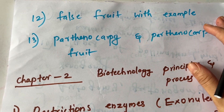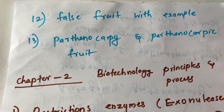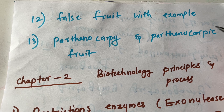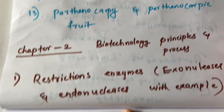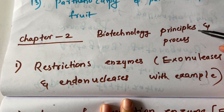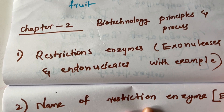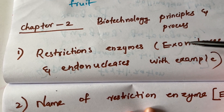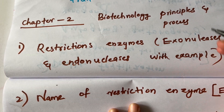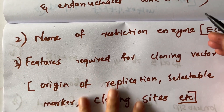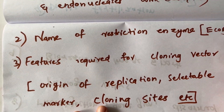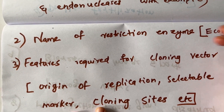False fruits with examples. Parthenocarpy and parthenocarpic fruits. In the next chapter, Biotechnology: Principles and Processes — restriction enzymes, exonucleases and endonucleases with examples, and names of restriction enzymes such as EcoRI.